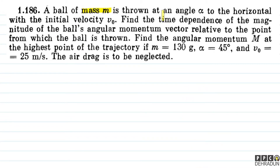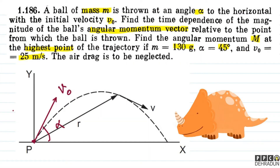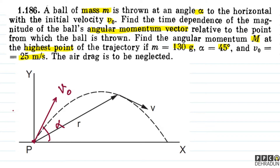The question says: a ball of mass m is thrown at an angle alpha to the horizontal with the initial velocity v₀. Find the time dependence of the magnitude of the ball's angular momentum vector relative to the point from which the ball is thrown. Find the angular momentum M at the highest point of the trajectory if m = 130 grams, alpha = 45°, v₀ = 25 m/s. The air drag is to be neglected. We have to find the time dependence of the magnitude of the ball's angular momentum vector with respect to the point of projection.